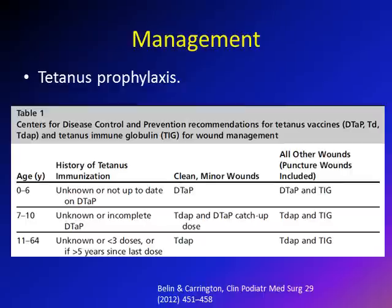For general management, tetanus prophylaxis is extremely important. Assess the child's immunization history: if three or more doses within the last five years, no additional immunization is needed. If three or more doses but more than five years ago, give a booster dose. If less than three doses, give tetanus immunoglobulin plus the vaccine — three doses of DTaP if under seven years old, or Td if seven or older.